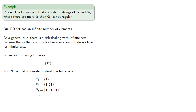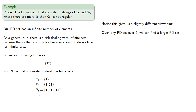While it's not a big thing, it is worth noting that this proof gives us a slightly different viewpoint. Our first proof showed that any two elements were pairwise distinguishable. This proof tells us that given any pairwise distinguishable set, we can always find a larger pairwise distinguishable set.